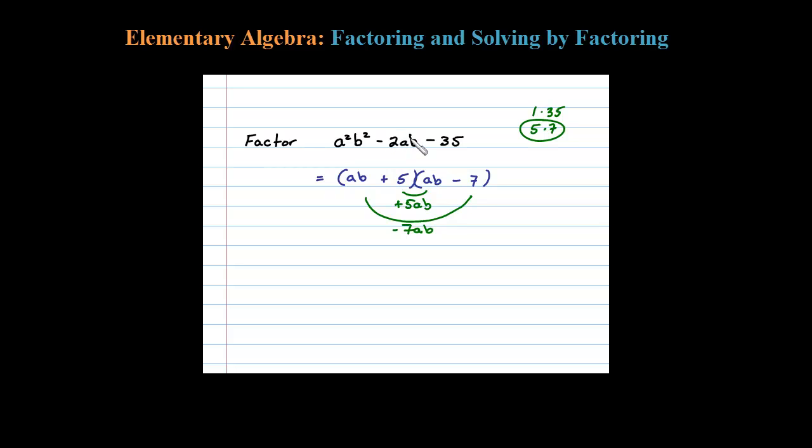Now we have to check the sign of the last term. So 5 times negative 7 is negative 35. Looks good, checks out.